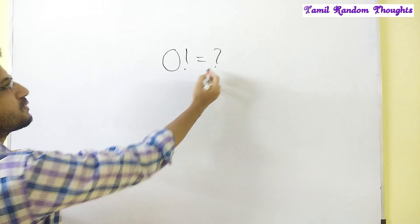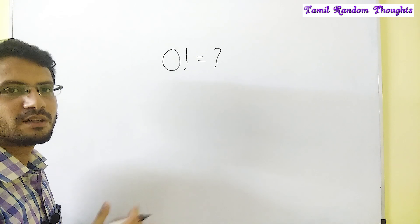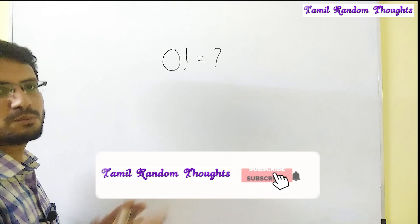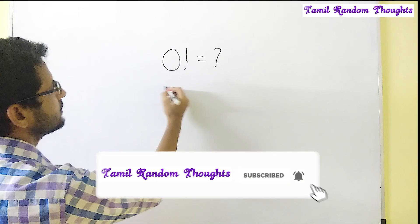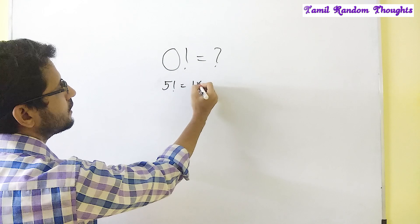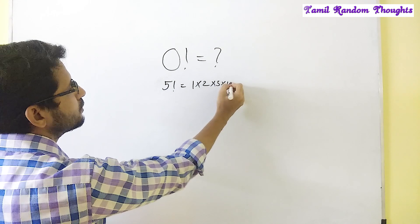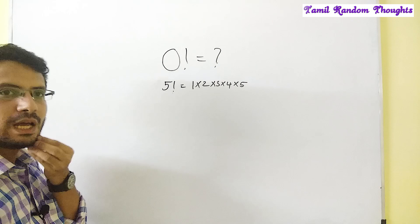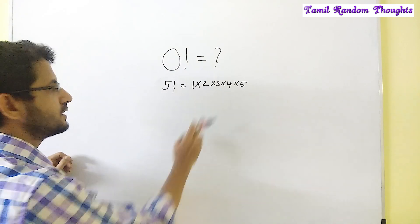First, we will talk about the factorial. If we talk about this, we will talk about the number of zero. This is the factorial — the factorial is related to the number zero.